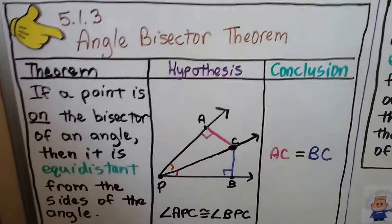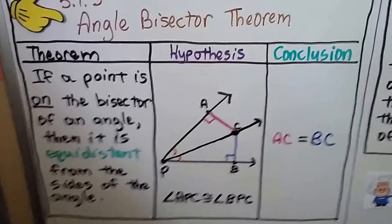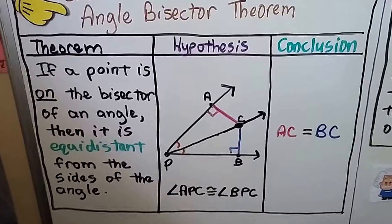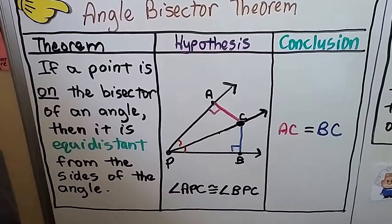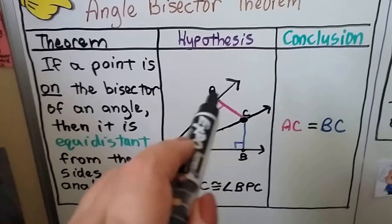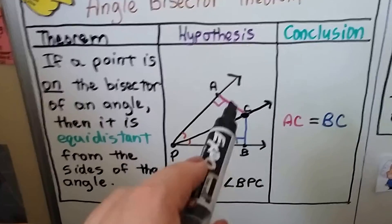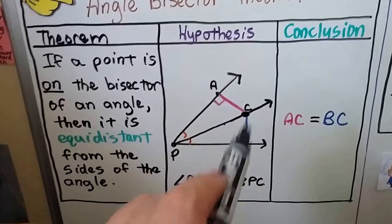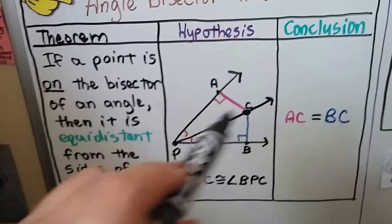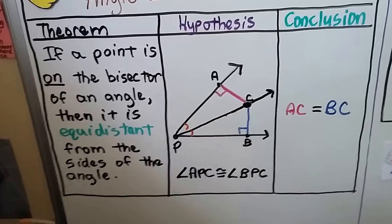Here's our angle bisector theorem. If a point is on the angle bisector of an angle, like this C, then it is equidistant from the sides of the angle. So C is equidistant from this ray and from this ray, meaning AC is equal to BC. And angle APC is congruent to angle BPC — these two angles are congruent.